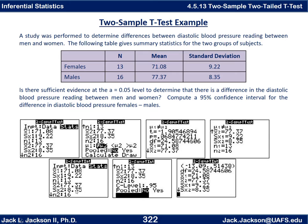The main thing is the p-value. The p-value is 0.068 and our alpha is 0.05. Since p is greater than alpha, we do not have enough evidence to conclude that there is a difference in diastolic blood pressure between men and women.